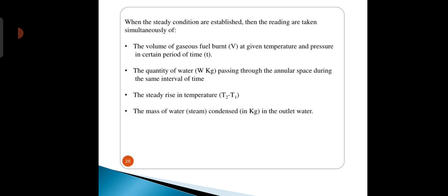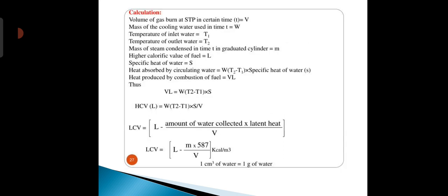See the calculations. Volume of gas burned at standard temperature and pressure in certain time is V. Mass of cooling water used in time is W. Temperature of inlet water is T1, temperature of outlet water is T2. Mass of steam condensed is M. High calorific value is L. Specific heat of water is S. Heat absorbed by the circulating water is equal to W times T2 minus T1 times S.